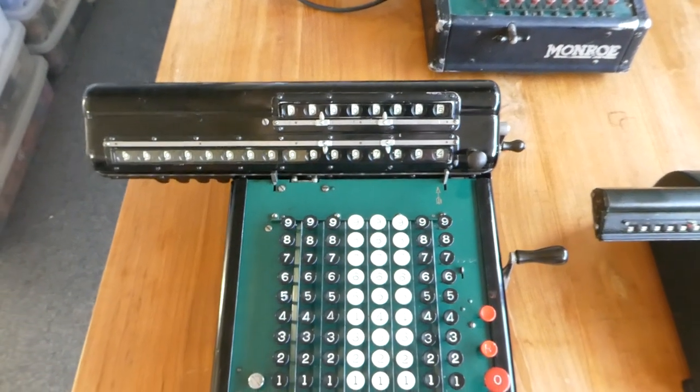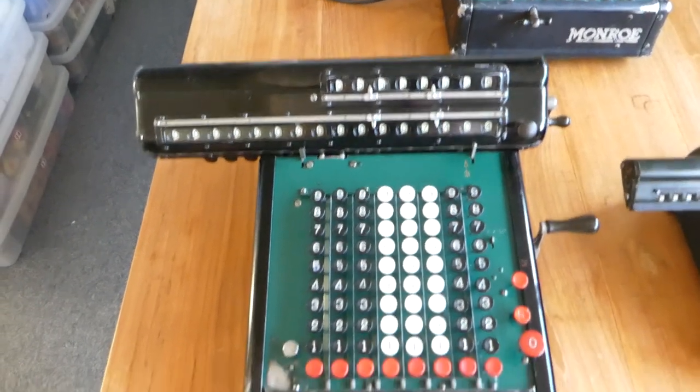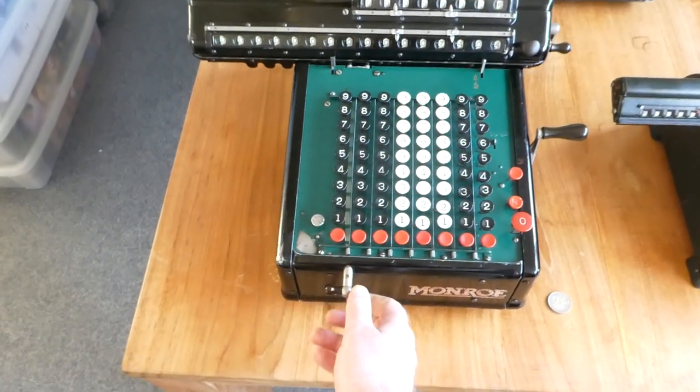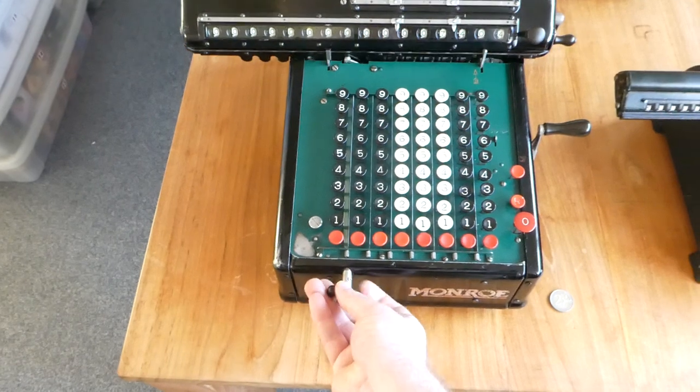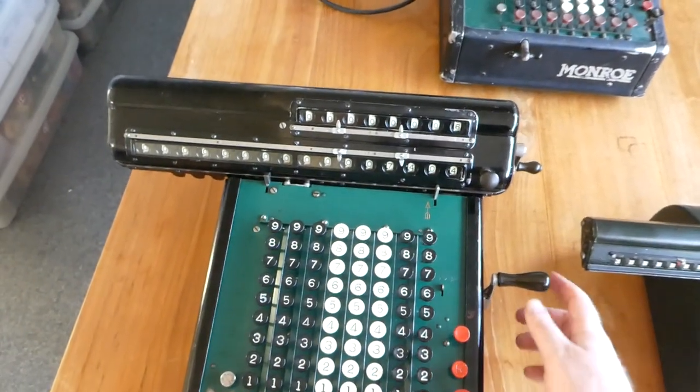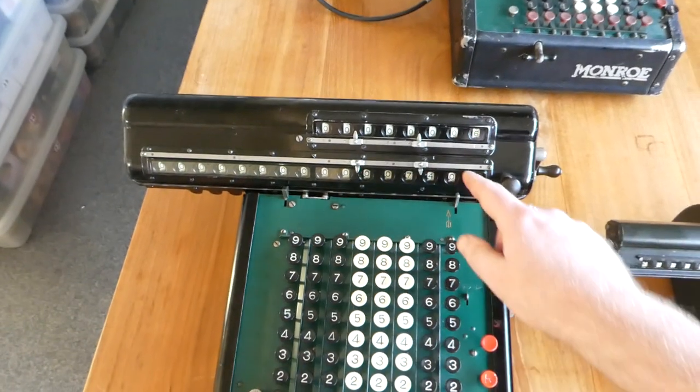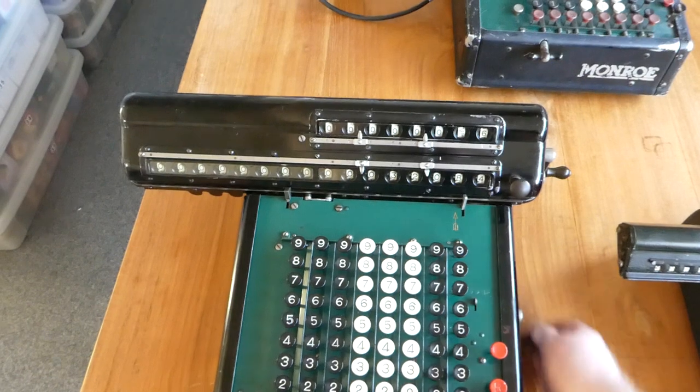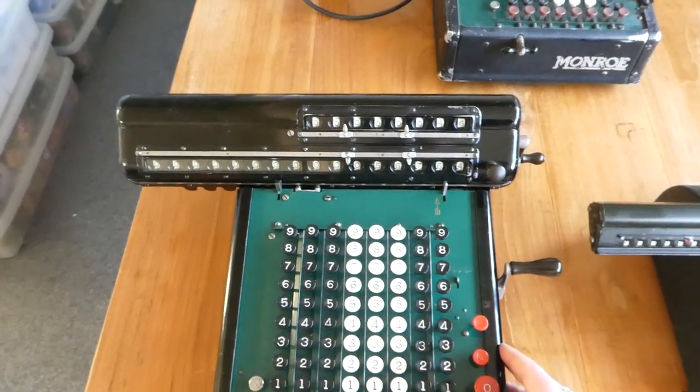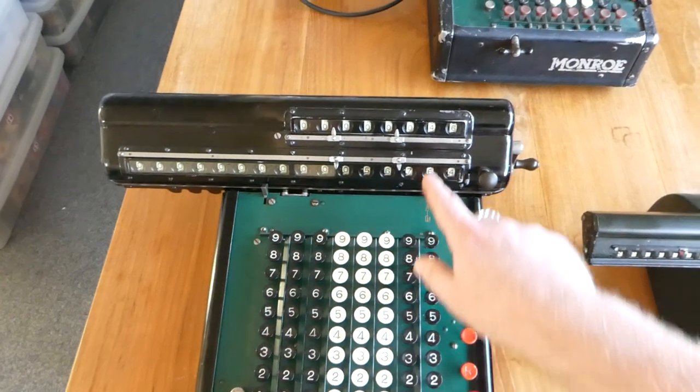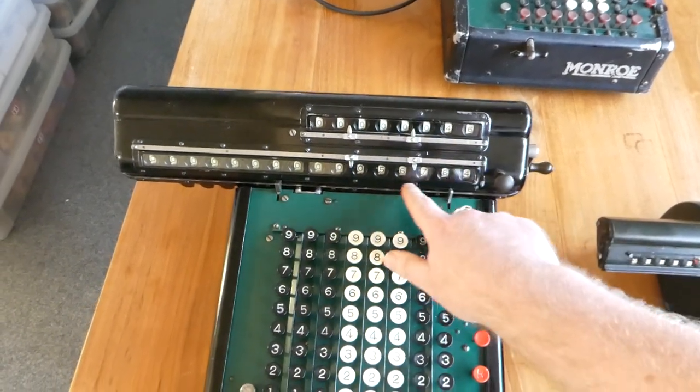I can then shift the whole carriage by turning this knob at the front here. So I've shifted it only one place to the right. Now I can multiply the tens digit. So I've done it now four times. So in total I've multiplied the input by 46, and the result is here.